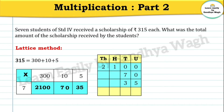So 2100 plus 70 plus 35. Adding the units place: 0 plus 0 plus 5 equals 5. Tens place: 0 plus 7 plus 3 equals 10, so we write 0 and carry 1 to the hundreds place. Hundreds place: 1 plus 1 plus 1 plus 1 equals 2, but wait — the thousands place has 2, so we write 2 there. Our final answer is 2205.